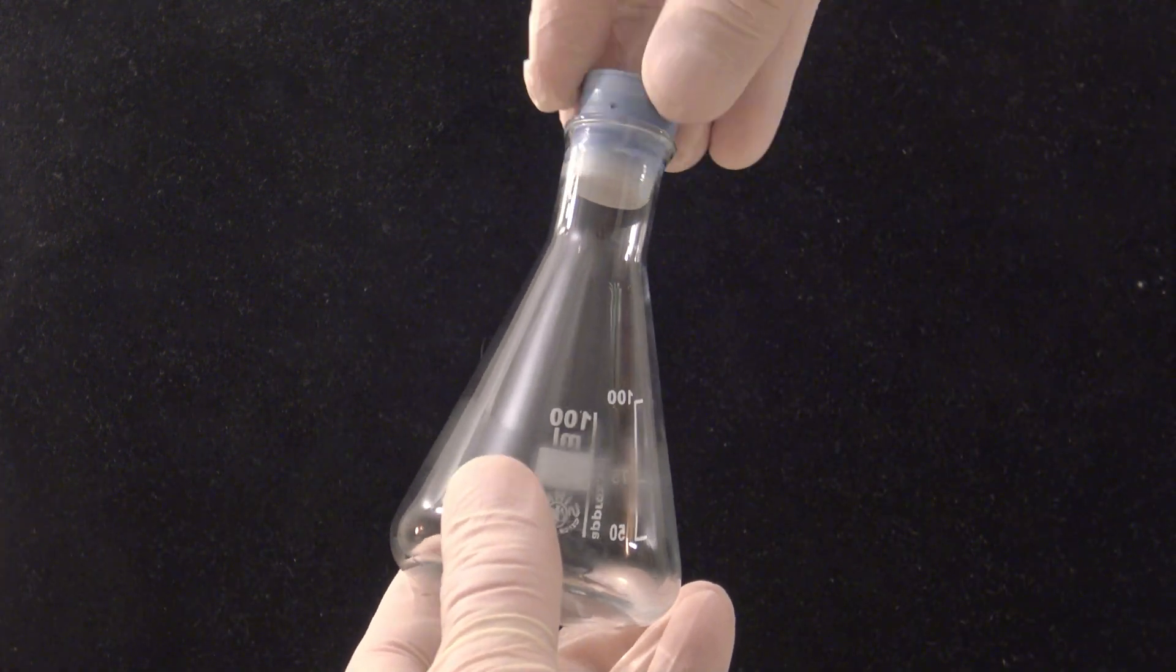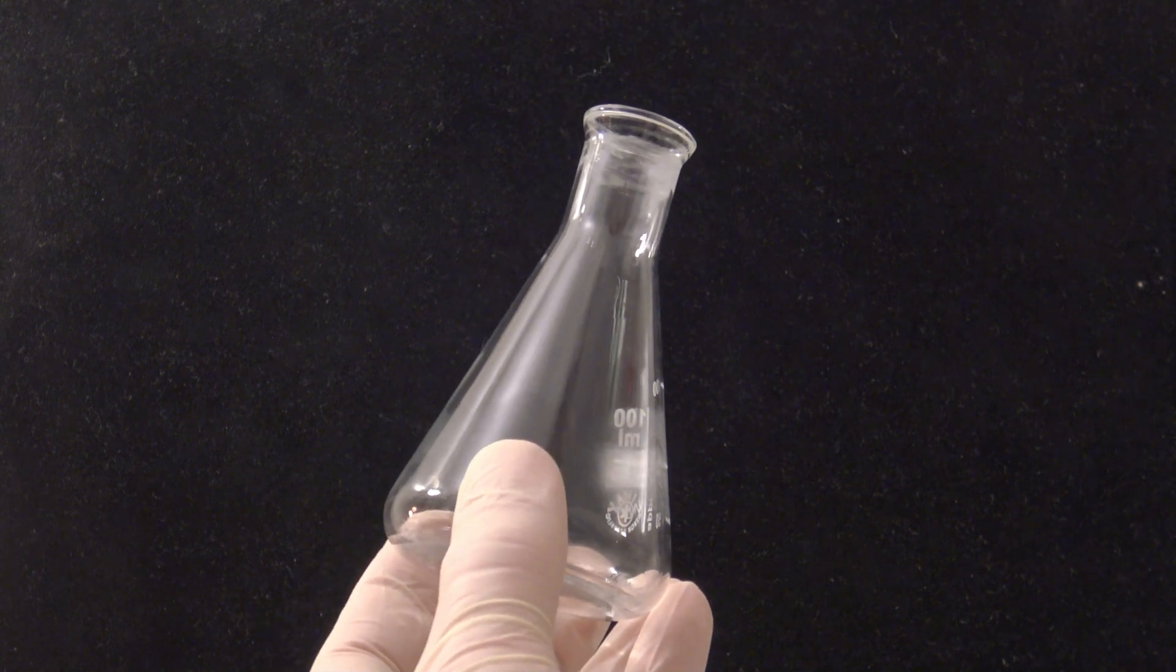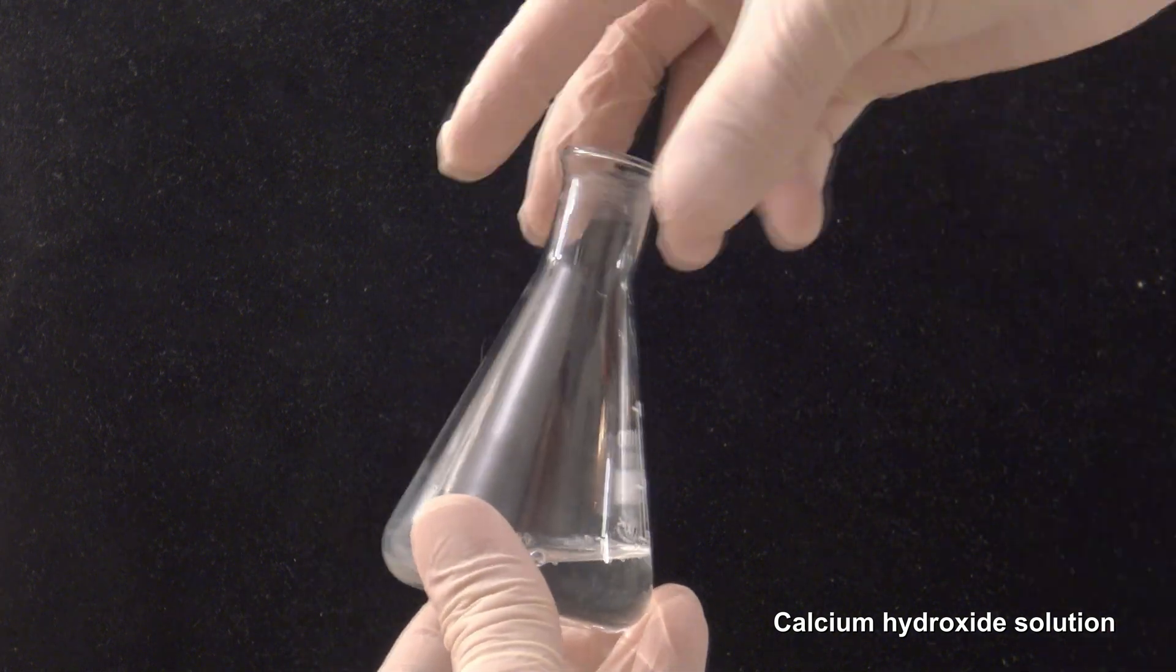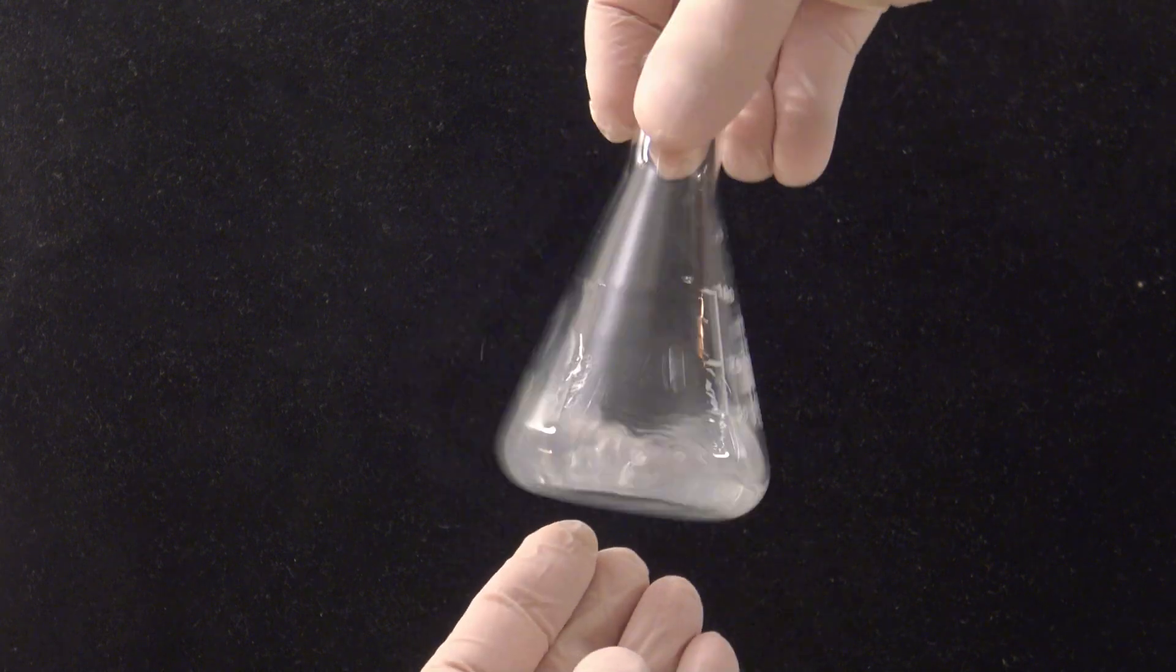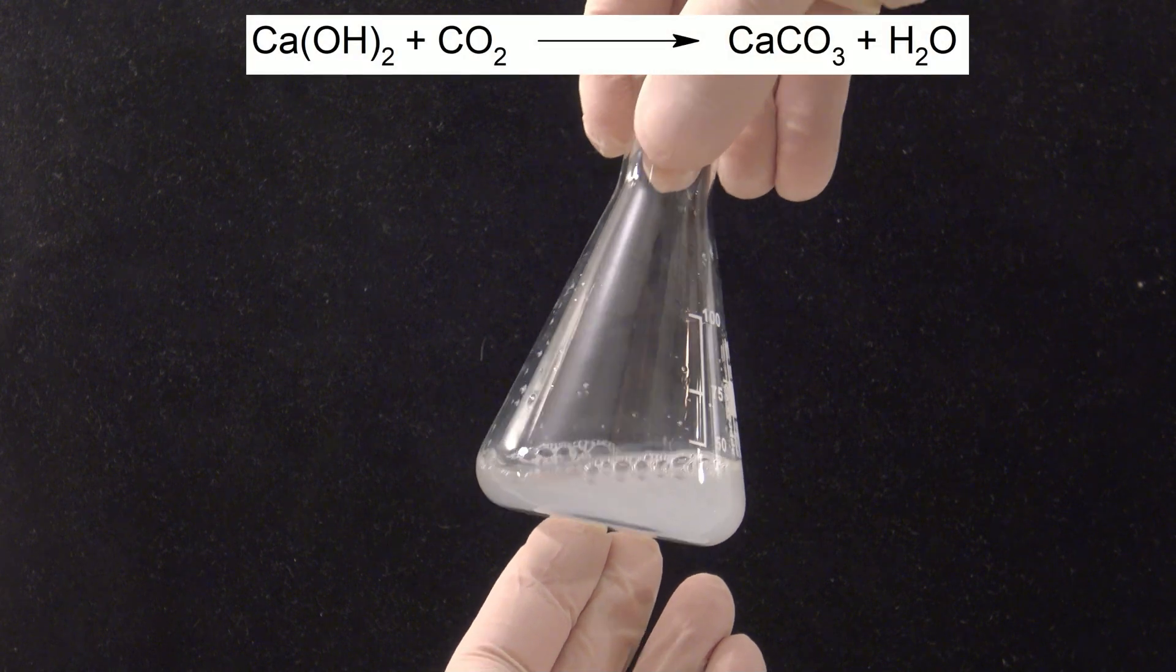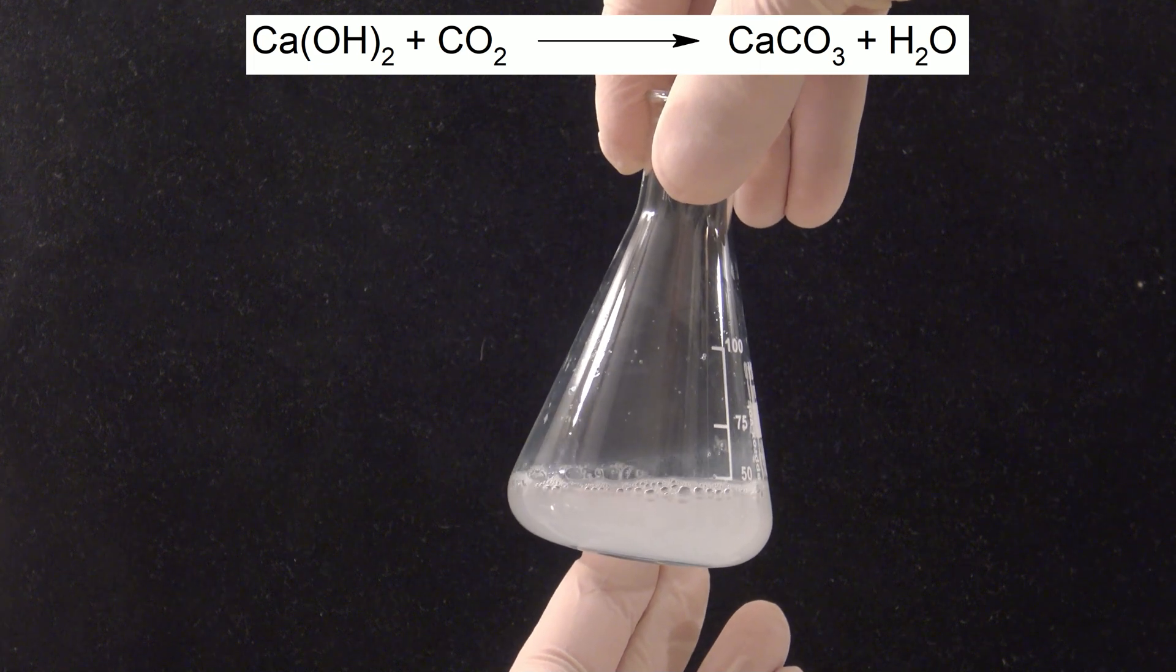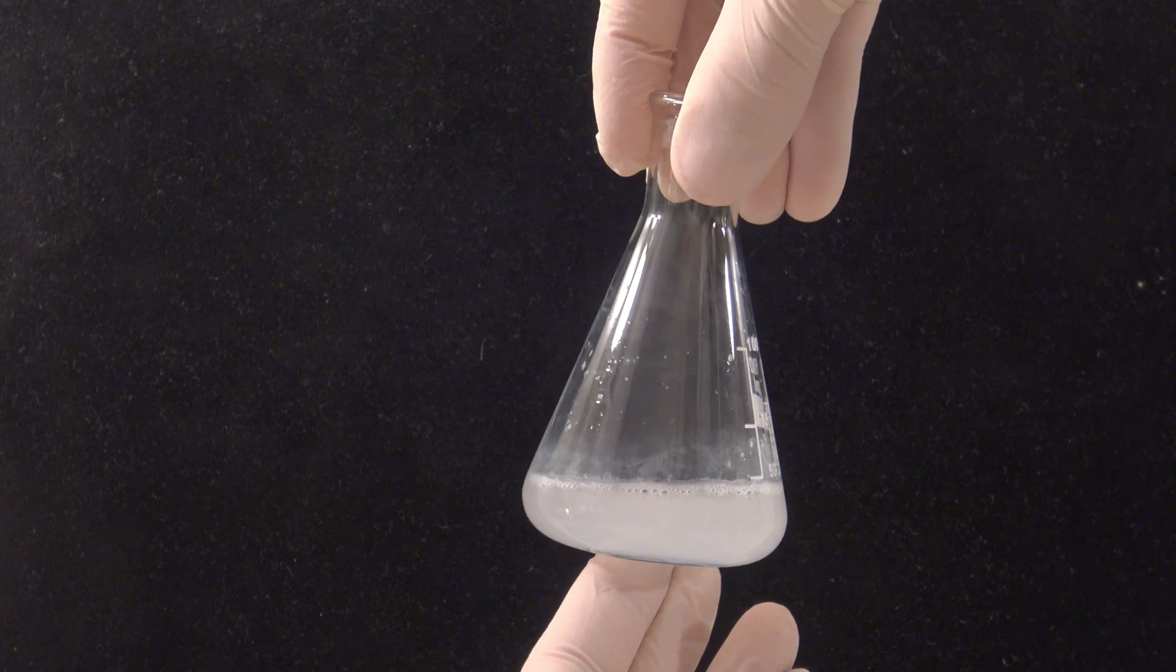The second product of the combustion can be detected by adding a calcium hydroxide solution. When the flask is shaken, the solution becomes cloudy. The second compound is carbon dioxide, which reacts with the calcium hydroxide to form insoluble calcium carbonate and water. This leads to a cloudy solution.